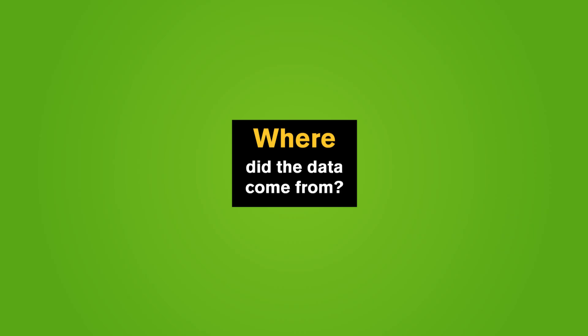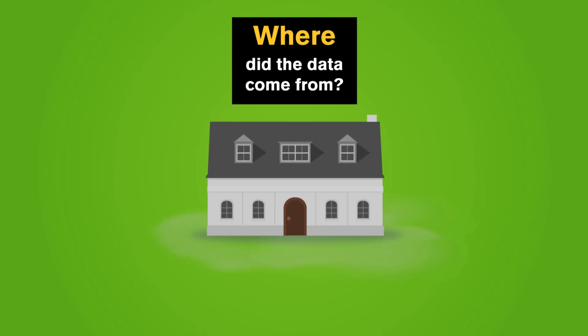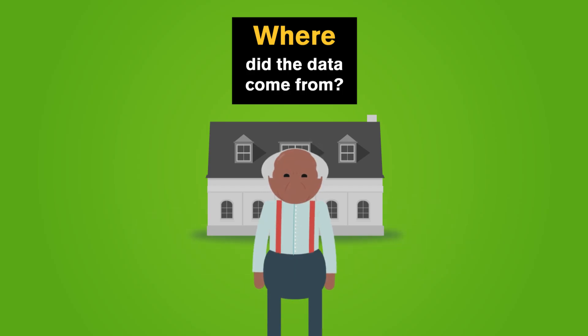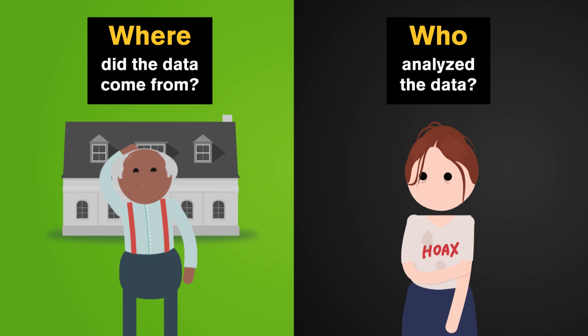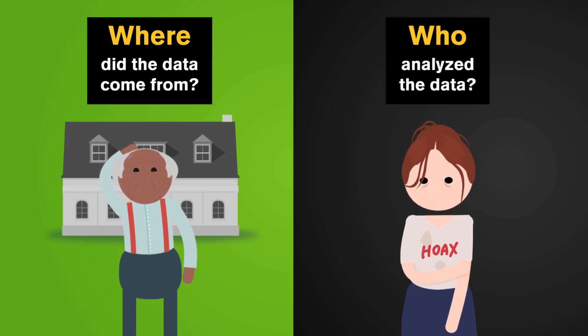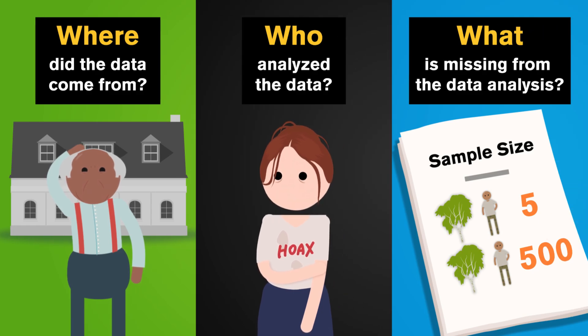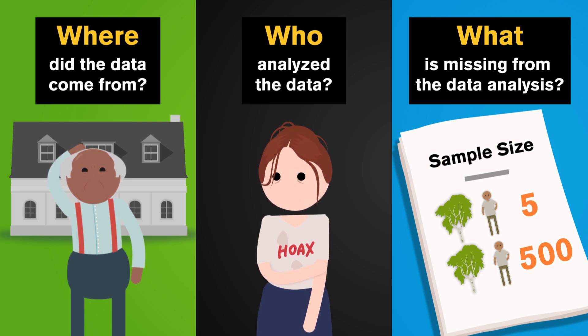Let's go back to those trees. First, ask where the data came from. Whatever the overall conclusion is, it might be misleading if participants were all from, say, a retirement home — we might expect its older residents to be losing their hair for other reasons than long hikes in the forest. Second, think about who analyzed the data. Maybe they have the same dedication to data literacy as we do, but maybe not. Or they might have a particular point of view that introduces some bias, whether they mean to or not. Third, look for anything that's missing from the data analysis. Beyond the headline, find out how the sample was collected and how big it was — are we talking about five tree climbers with thinning hair, or 500?